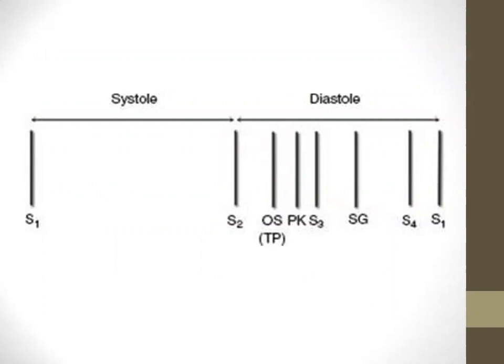Diastolic sounds: Opening snap (OS) — earliest diastolic sound, high-pitched, caused by mitral leaflets (or tricuspid) snapping open in mitral stenosis. Tumor plop — occurs at the same time as the opening snap, heard in patients with myxoma. Pericardial knock (PK) — best heard with the diaphragm, varies with respiration, seen in constrictive pericarditis due to rapid early LV filling. Summation gallop (SG) — S3 and S4 combined, as discussed.